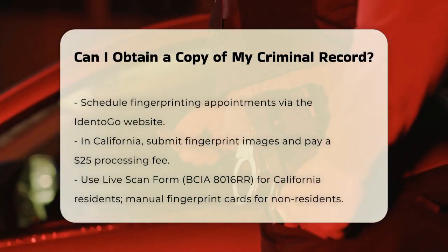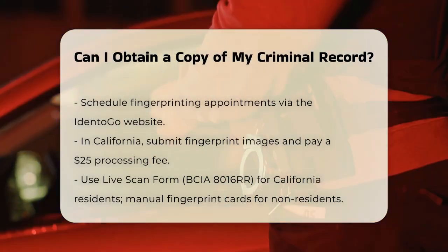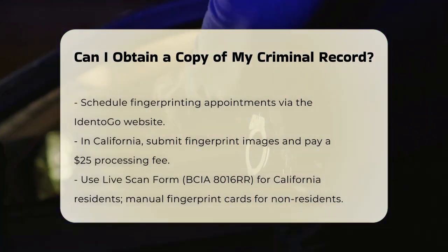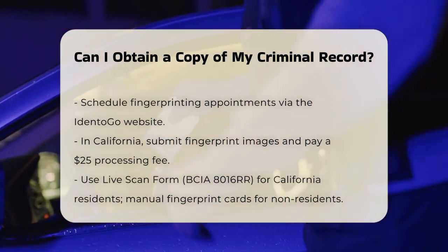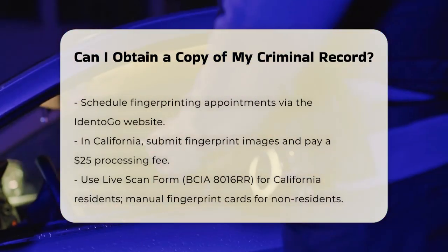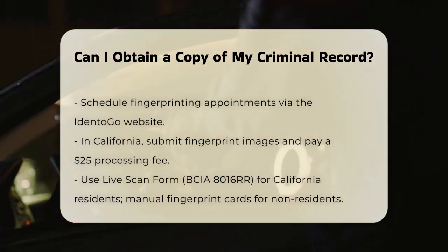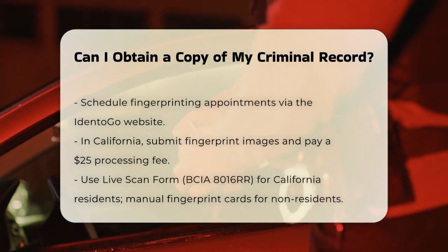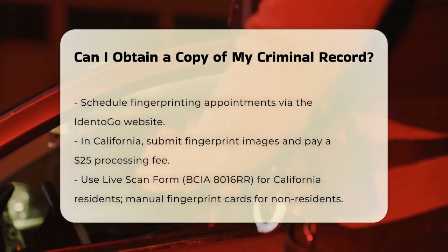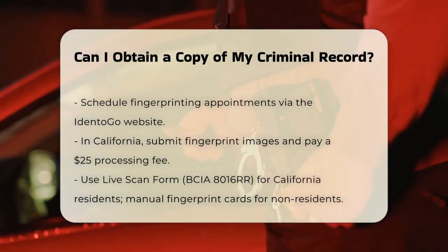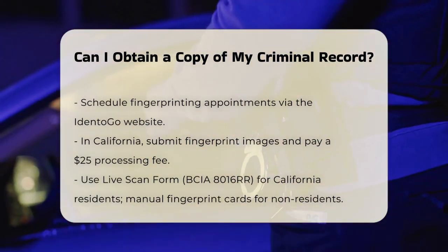For federal-level records, for a more comprehensive record, you can request a copy from the Federal Bureau of Investigation (FBI). To do this, you need to submit a written request to the FBI's Criminal Justice Information Services (CJIS) Division, including your name, address, place of birth, and a complete set of fingerprints. You can obtain fingerprint cards from your local police department or through the FBI's website.